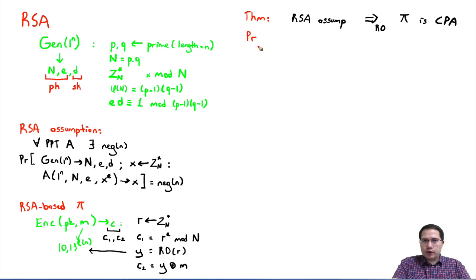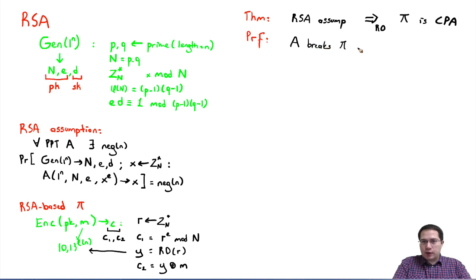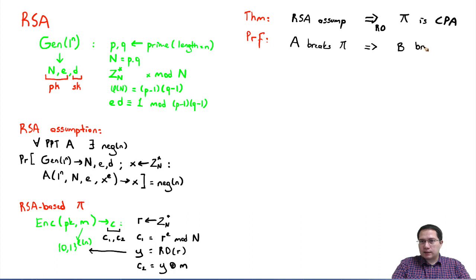Our proof will look like the following. If there exists a probabilistic polynomial time adversary A who breaks CPA security of the scheme π, then we are going to construct another probabilistic polynomial time adversary B that has non-negligible advantage in the RSA assumption — so it breaks the RSA assumption. This needs to be done in the random oracle model, so B needs to simulate the random oracle for A.